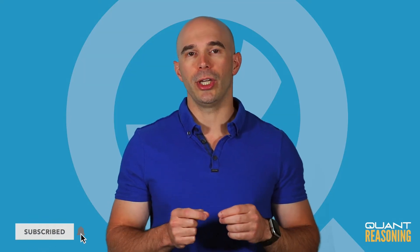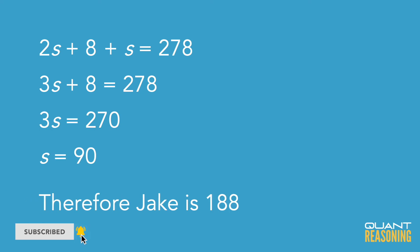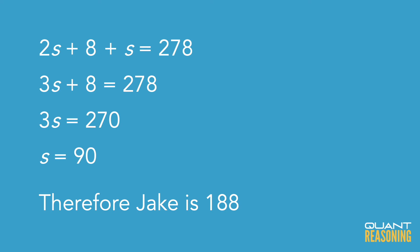Now that we know the sister weighs 90 pounds, Jake has to weigh the remaining 188 pounds. And that's the correct answer, E.